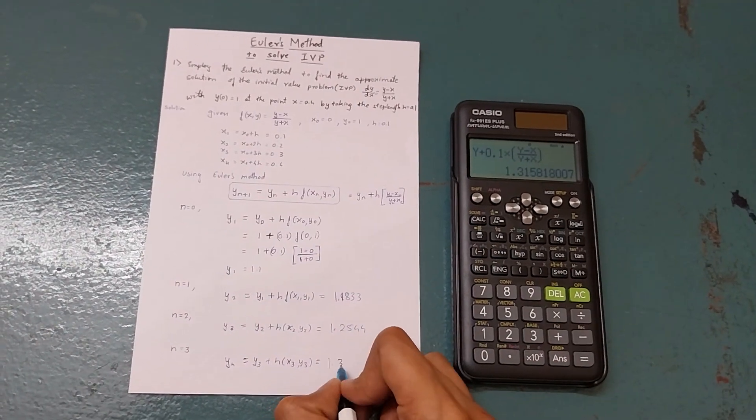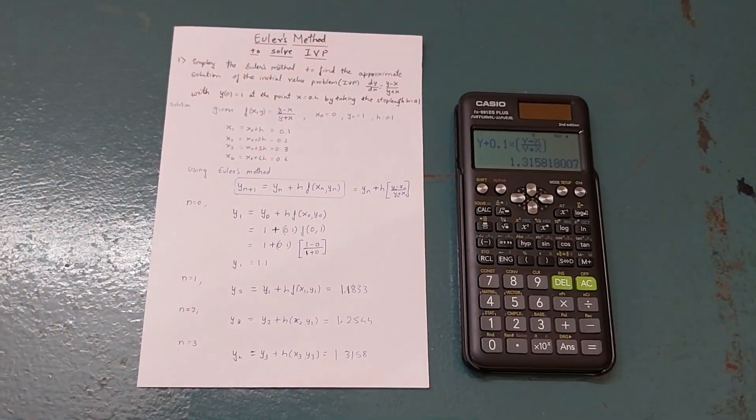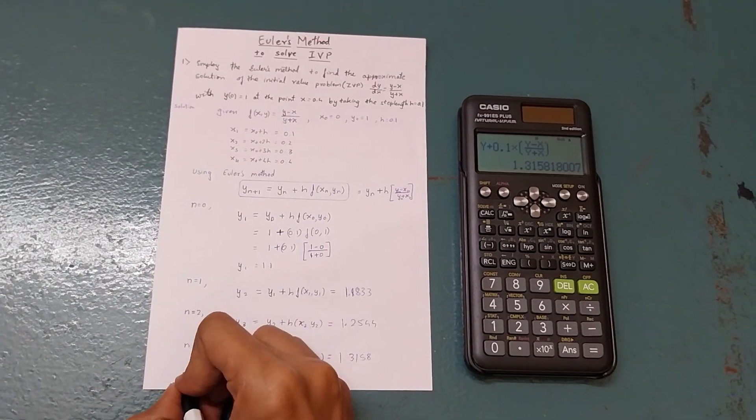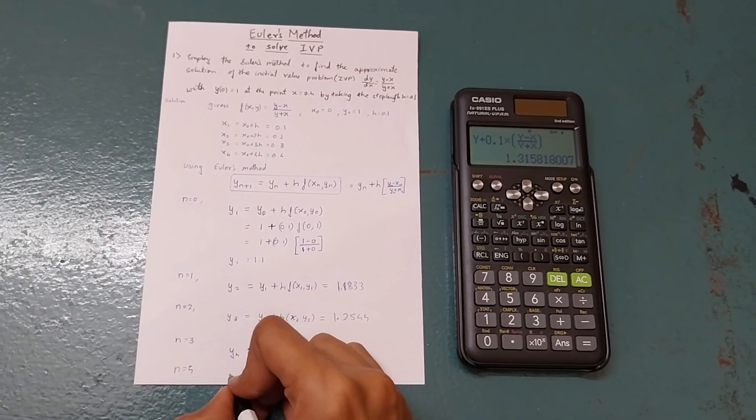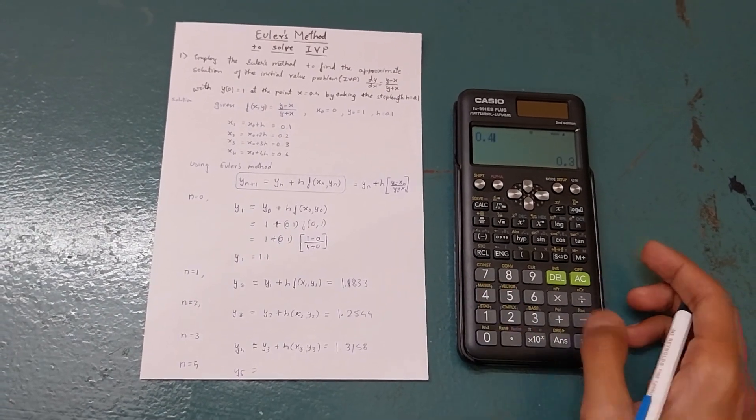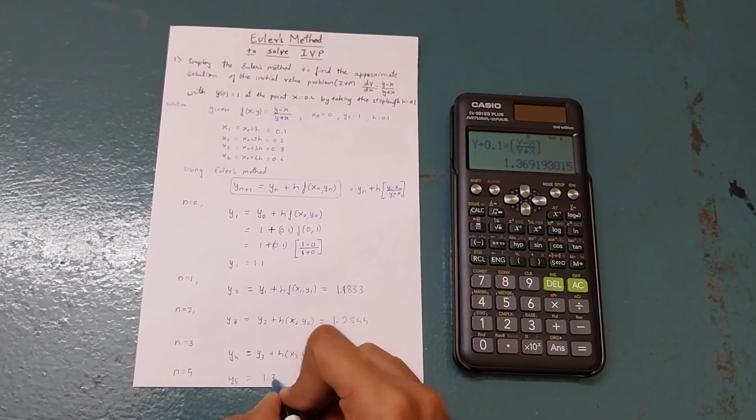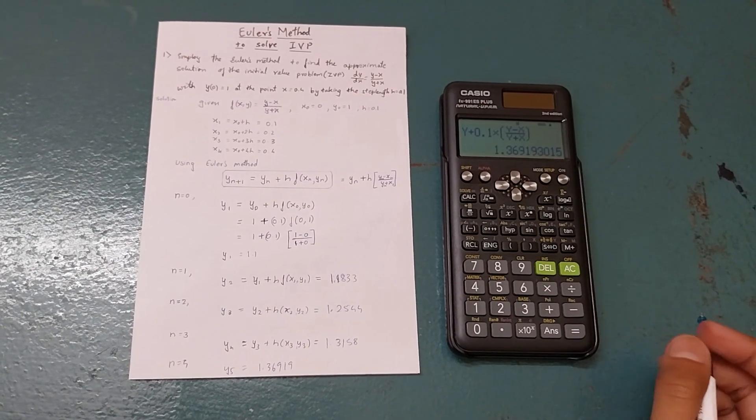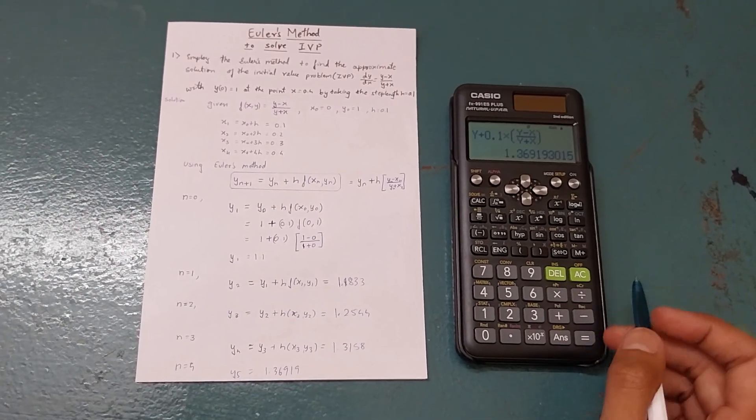Press equals, y value is answer, x value is 0.3, and you get 1.3158. Similarly for n equals 4, press equals, answer, then x value is 0.4, and this is 1.36919. This is how you can fill all the values.